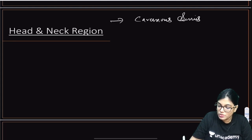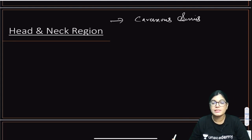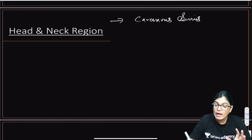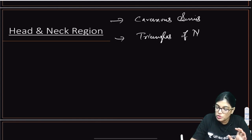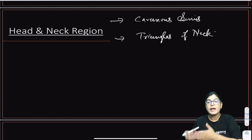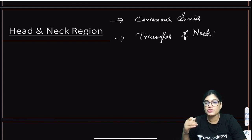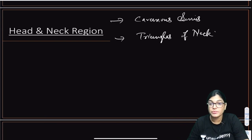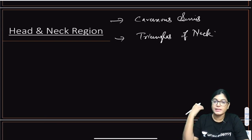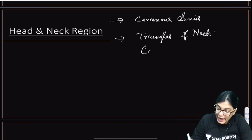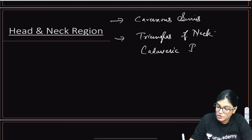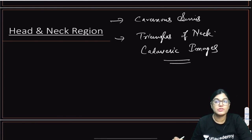MCQs about the cavernous sinus can be framed as clinical scenarios asking which nerves are involved, since many important nerves are located in its lateral wall and traverse through it. Triangles of the neck — all triangles are important: posterior triangle, digastric triangle, carotid triangle, muscular triangle, suboccipital triangle, and the scalene vertebral triangle. You must know the boundaries, contents, and how nerves traverse these triangles, along with cadaveric images for identification of structures.